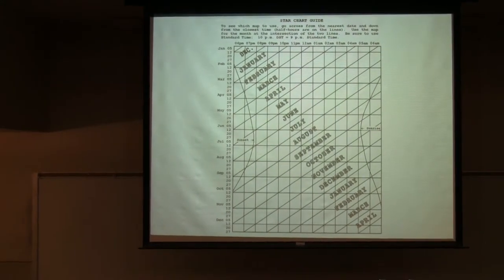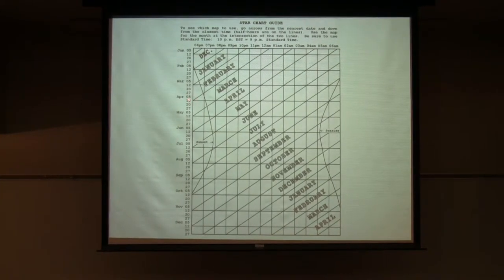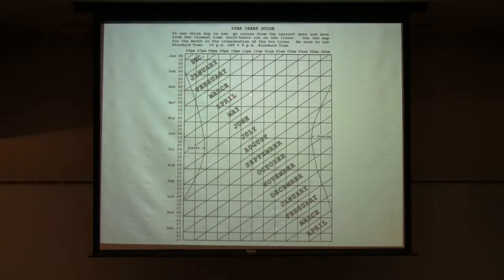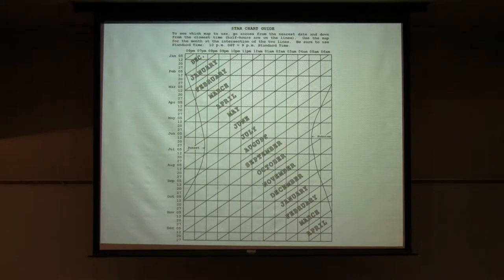If we start with April 12th, which is close enough, and move across to around 8 PM, you see that we're just getting into the April sky map — which isn't too surprising, that's why we call it the April sky map. But if you look out later tonight, you'll see that we go successively through May, June, July, and just before sunrise tomorrow morning we'll be into the August and almost September sky maps.